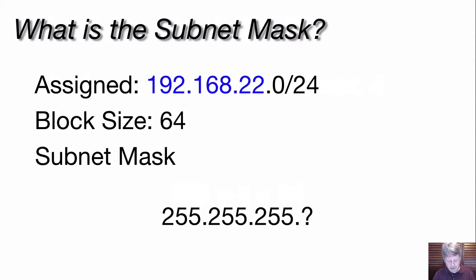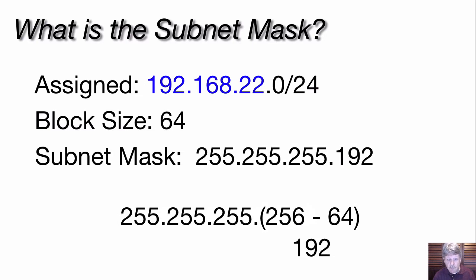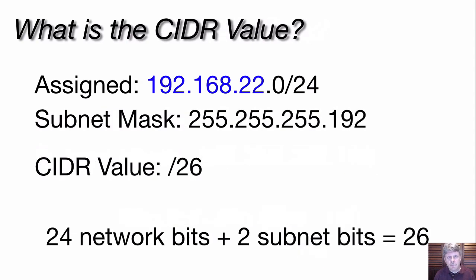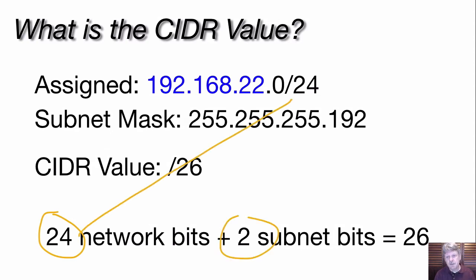Now let's put that magic number to work. First, we figure out our subnet mask. Since we have an assigned address that is 24 bits, our first three octets are all going to have bits of value one in our subnet mask — so three 255s. For the fourth octet, with a block size of 64, we subtract that from 256 and get 192, which is the value of that octet for the subnet mask. So our subnet mask is 255.255.255.192. The CIDR value is our 24 network bits plus the two subnet bits we've borrowed, giving us /26.